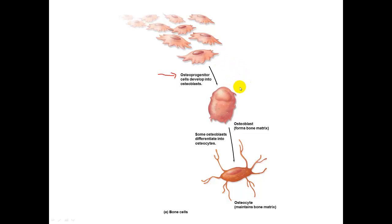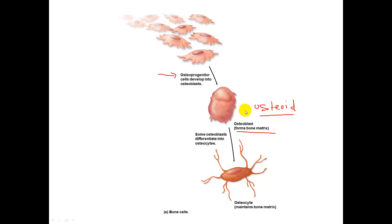If osteoprogenitor cells develop into osteoblasts, these are the cells that will build bone. They are often positioned side by side on bone surfaces and synthesize and secrete osteoid, which is the organic component of bone. This organic component will later calcify, and as it calcifies the osteoblasts become trapped inside the bone and differentiate into osteocytes. The osteocyte then maintains the bone matrix around it.